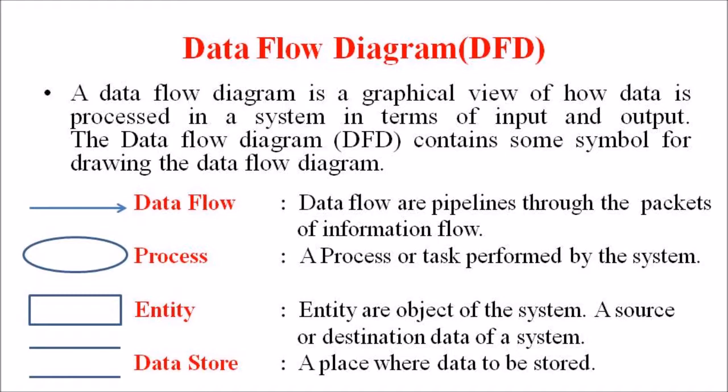Data flows are pipelines through which packets of information flow, and a data flow is represented by a line with an arrowhead. A process is a task performed by the system, represented by an ellipse or circle. An entity is an object of the system — a source or destination of data — representing the endpoints, shown by a rectangular box. A data store is a place where data is stored, represented by two parallel lines.